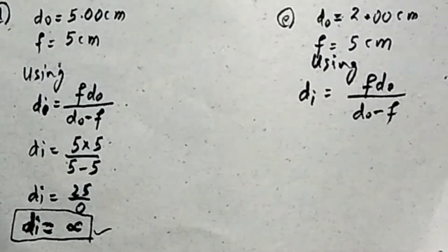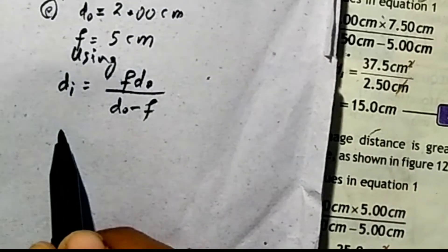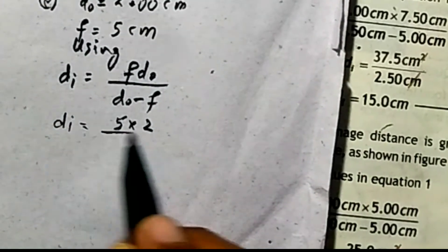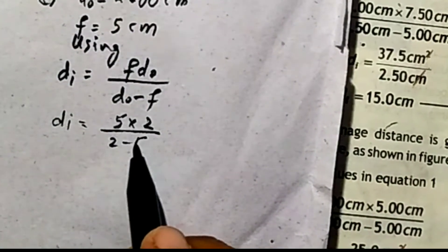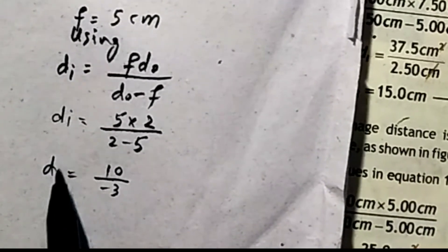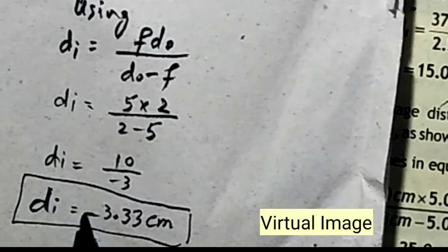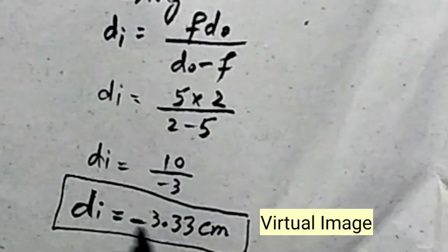For the last part, the distance of object is 2.00 cm. d-i = 5 × 2 / (2 minus 5) = 10 / (minus 3) = minus 3.33 cm. The negative sign indicates the image is virtual, formed behind the mirror. This is the required result for all five cases.